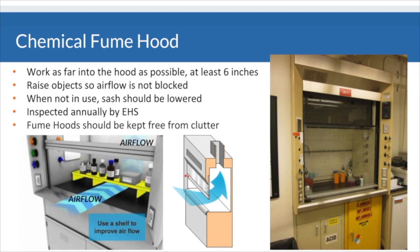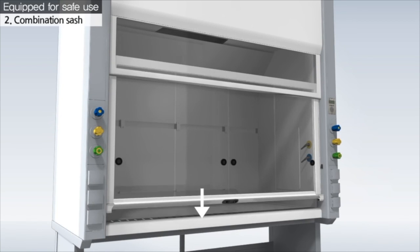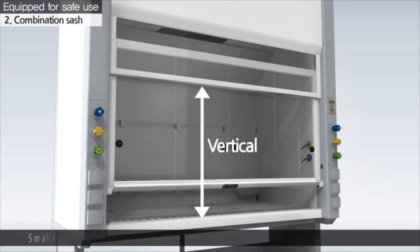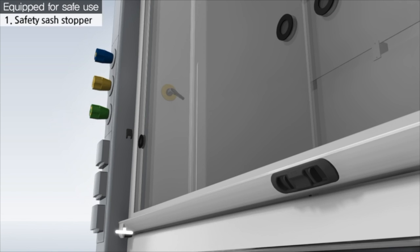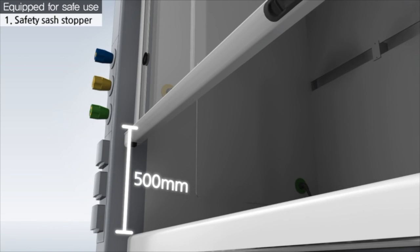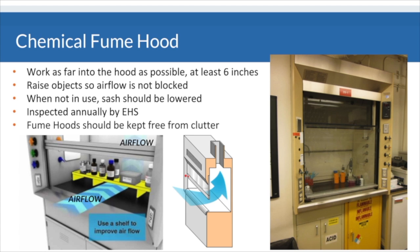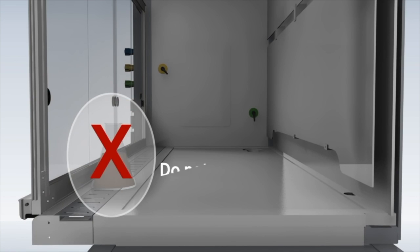The sash on a fume hood slides either vertically or horizontally and is designed to shield you from chemical splashes, flying debris, or inhalation of chemical vapors. Make sure you're working with the sash as low as possible and also work at least 6 to 8 inches inside the hood for your protection.